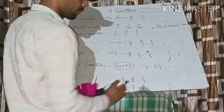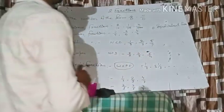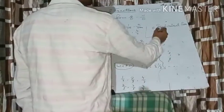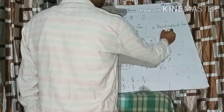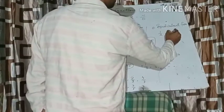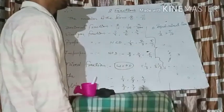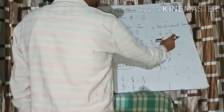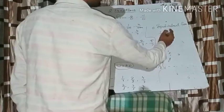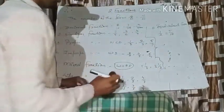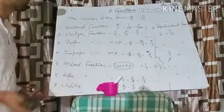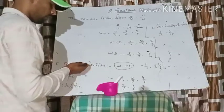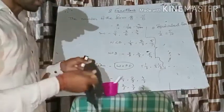Next is equivalent fractions. If we have two fractions and one upon two is equivalent to five upon ten, they are said to be equivalent fractions. If two fractions are equal, then we can say that they are equivalent fractions.